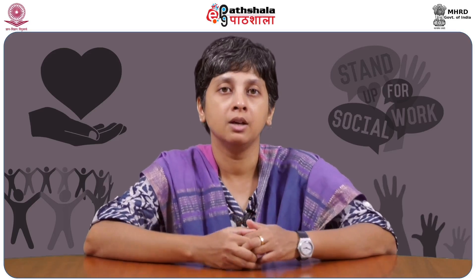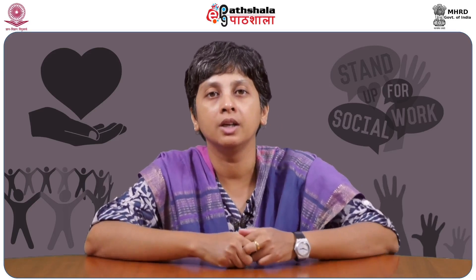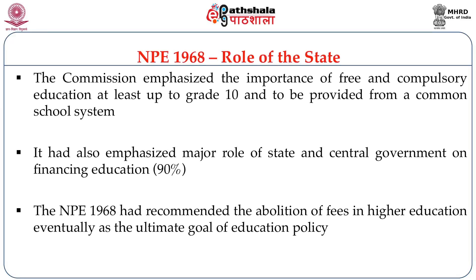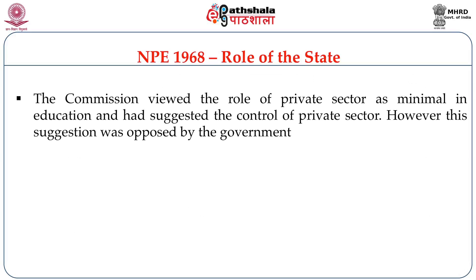We still spend much less on education than what was proposed in the 1960s. The NPE 1968 envisaged a particular role of the state in education provisioning — emphasizing free and compulsory education up to grade 10 from the common schooling system, with up to 90% of financing contribution from central government. It recommended abolition of fees in higher education as the ultimate goal. The commission viewed the role of the private sector as minimal and suggested it be regulated, though this suggestion was not taken up by the government at that time.